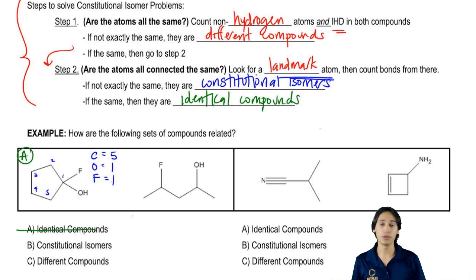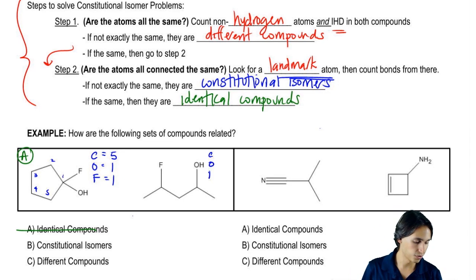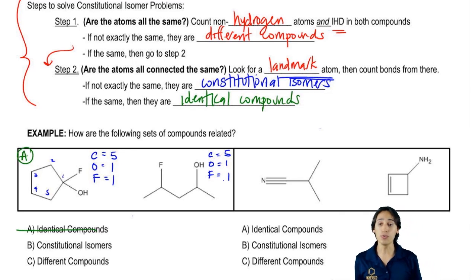Make sense so far? Now I'm going to do the same thing for the other one - carbons, oxygens, fluorines. How many carbons? Also five. How many oxygens? One. And fluorines, one. So far it looks like all the atoms are the same, so it looks like maybe these are constitutional isomers.